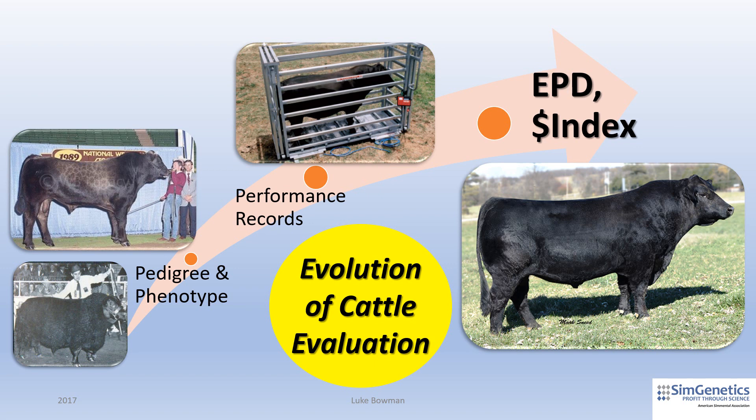Cattle that became heavier at maturity were also heavier at birth, leading to dystocia or calving difficulty. Other problems became prevalent as well. Cow maintenance and the costs associated with it increased, and timely breed back on the cow herd was often poor.